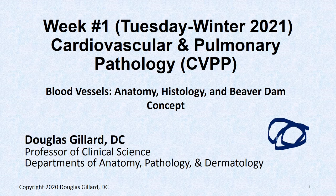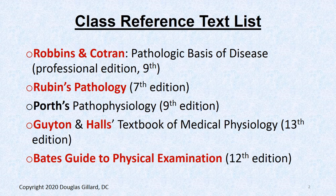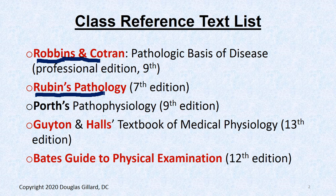Here we go — our first cardiovascular and pulmonary pathology lecture for the winter of 2021, which I call CVPP. Pretty much a review today of stuff you already know: anatomy, histology, and the concept of beaver dams. I built this class from scratch using Rubens and Robbins, which are on the list of the Board of Chiropractic Examiners, as well as Guyton and Bates.